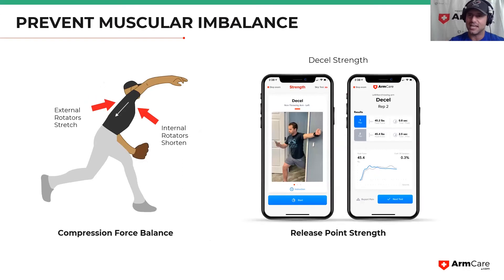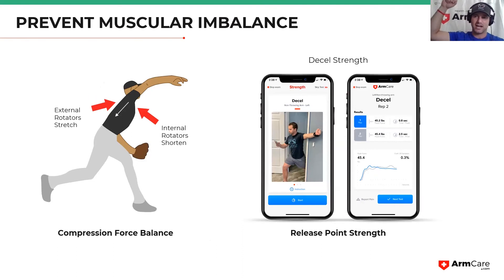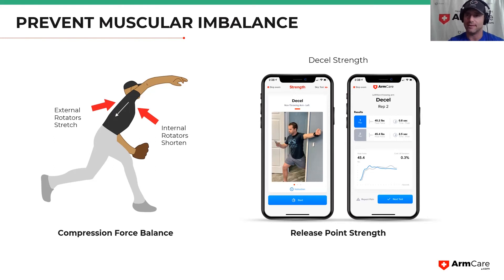Finally, the critical incident of throwing — from maximum layback to just after ball release — is where all the highest forces live. The highest force in the entire throwing sequence occurs during deceleration, and loads can exceed body weight. If muscular balance is off — for example, if internal rotator cuff strength greatly exceeds external rotator strength — the external rotators could be strained, stretched beyond their capacity, and potentially rupture over time. Muscular imbalance affects the entire sequence of throwing.